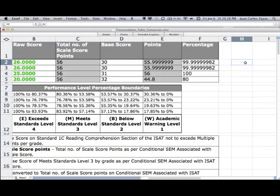These percentages fall into the boundaries of a scale score range for grades 3 to 5 as per the conditional SEM associated with ISAT reading scale score table. By inputting the raw score of a student's e-course, a resulting percentage is calculated. That percentage is used to assign a performance level via the corresponding scale score range.